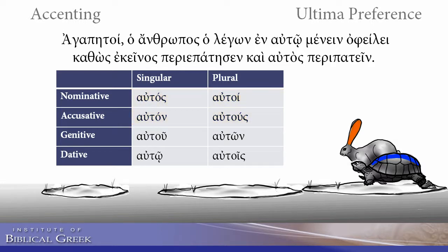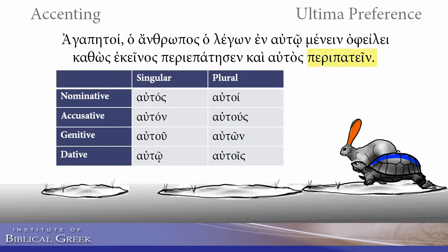The next word with an accent on its ultima is 'kathos' — it's an adverb, not in the first or second declension. So it's always going to have an acute, or a grave in this case because it's followed by another word. Remember, any time an acute is on the last syllable of a word and it's followed by another word, it changes to grave. Then we have 'ke' — again, not a first or second declension word, so it keeps an acute or grave because it's followed by another word. Then 'oftos' is a second declension word with an acute, changed to a grave here because it's followed by another word. Notice the last word in the sentence, 'peripatin,' has a circumflex over its ultima — that is due to a contraction and we'll cover that in our video on verbs.